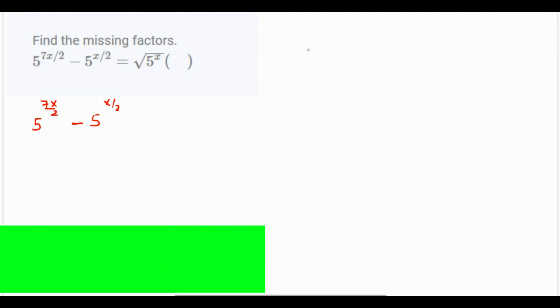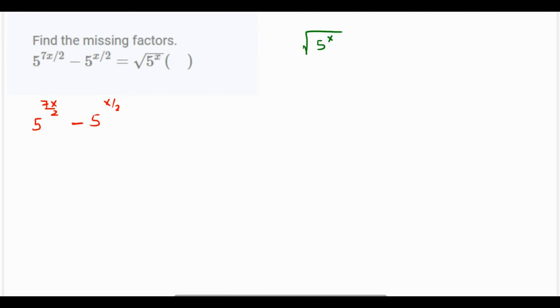Let's try to understand this. Root of 5 raised to x is nothing but 5 raised to x raised to 1 over 2, which is nothing but 5 raised to x over 2.